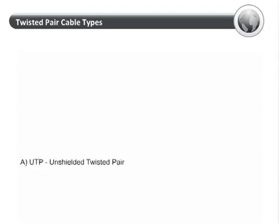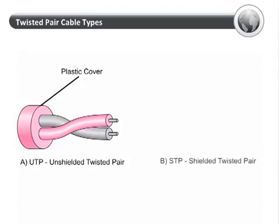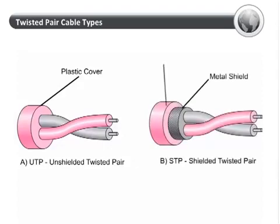Twisted pair cables come in two varieties: unshielded and shielded. An unshielded twisted pair cable simply consists of two copper cables twisted around each other with a plastic jacket. The twisting of the cables reduces electromagnetic interference, also called crosstalk, from external sources. Shielded twisted pair cables have a metallic shield that further protects the cable from electromagnetic interference. Twisted pair cables connect landline phones to the exchange, and Ethernet cable is another popular example.